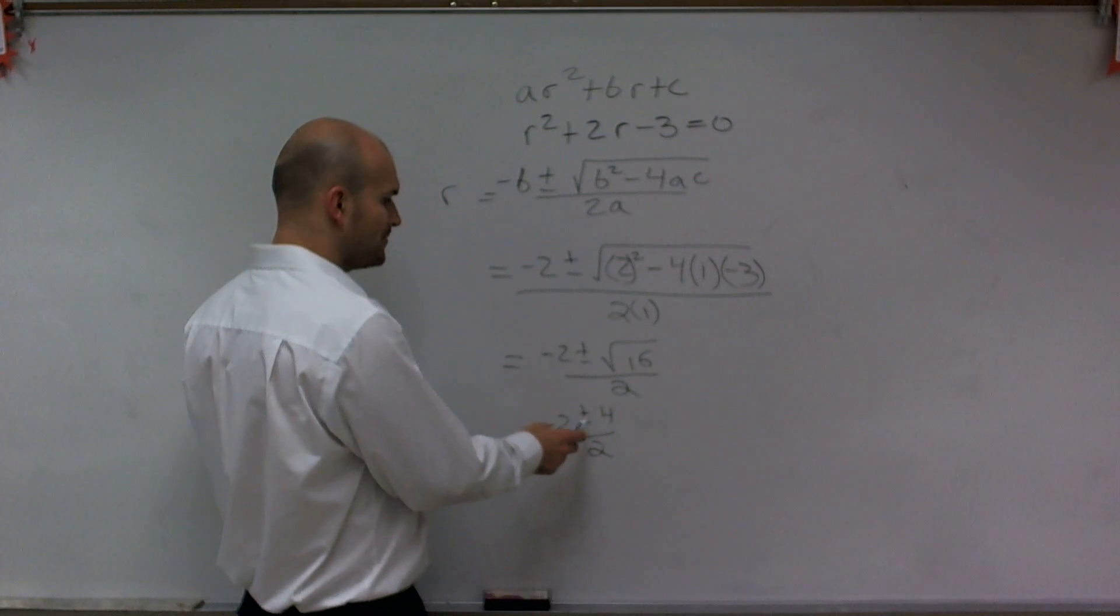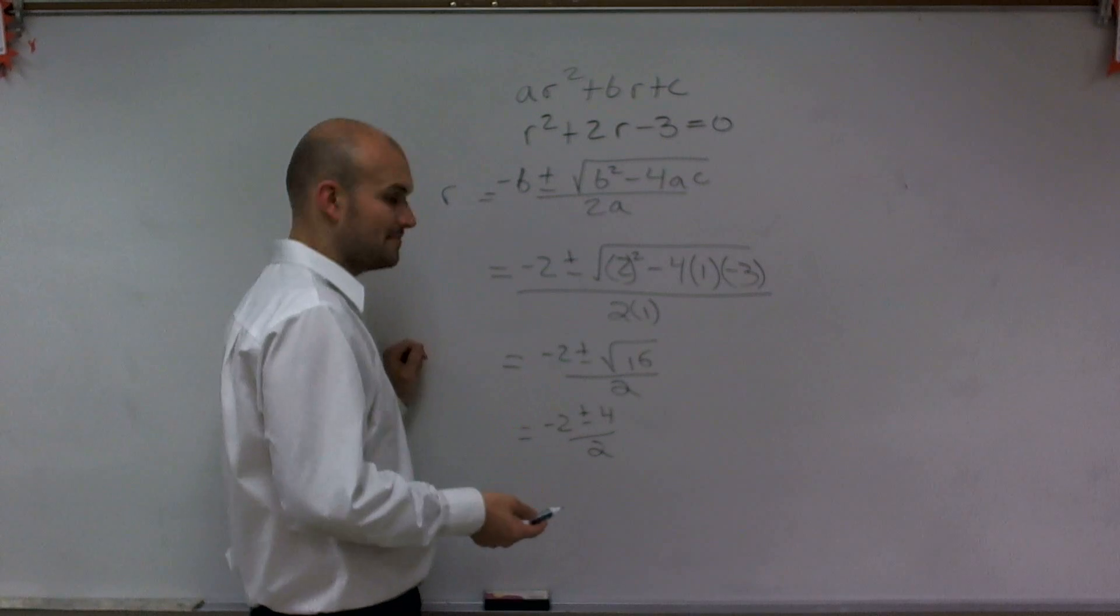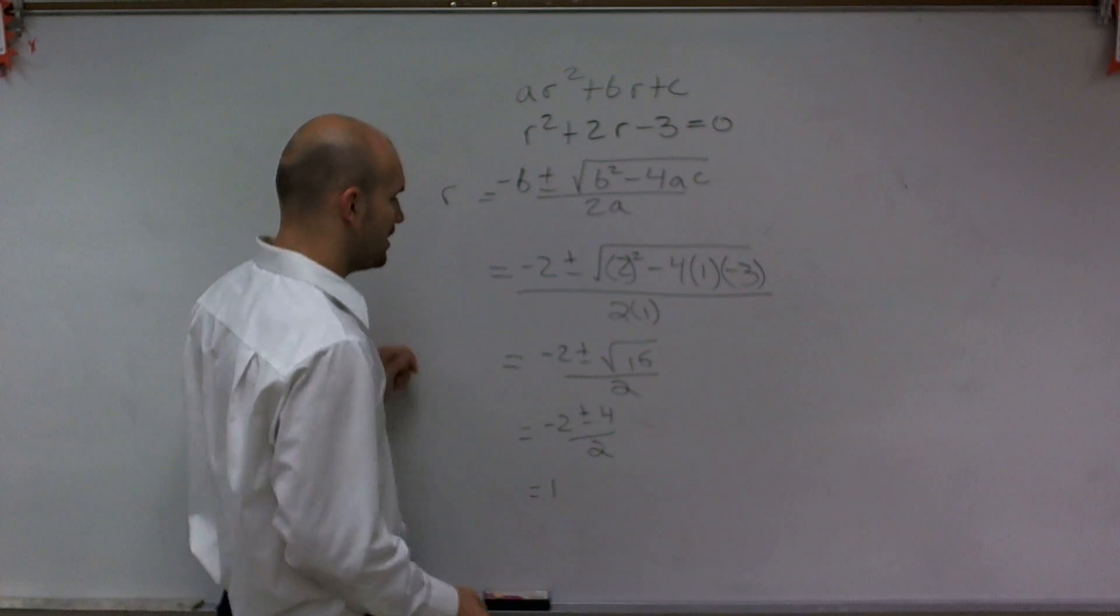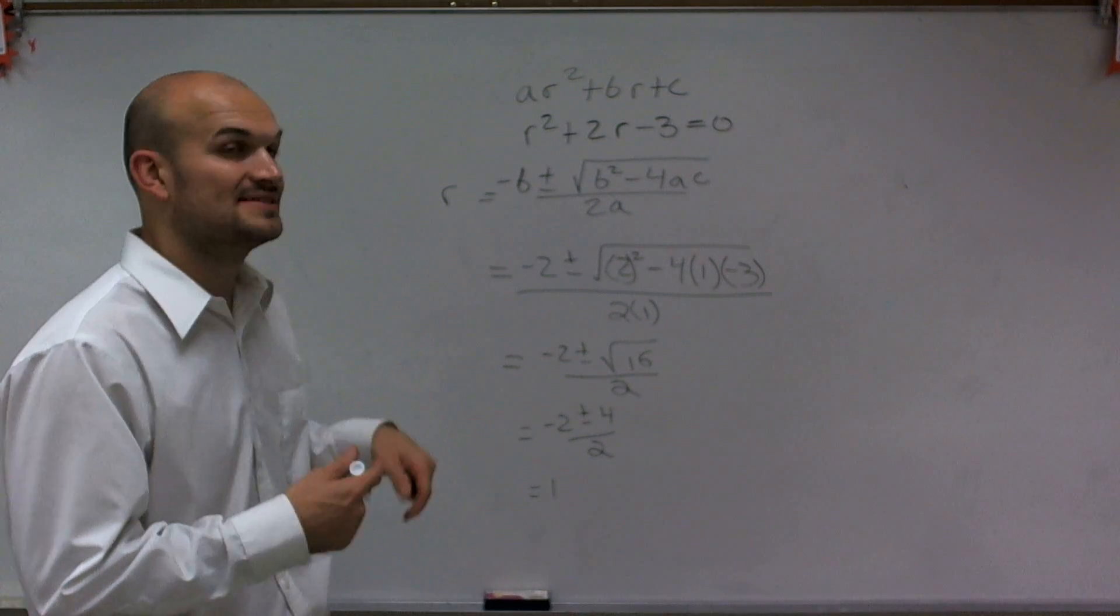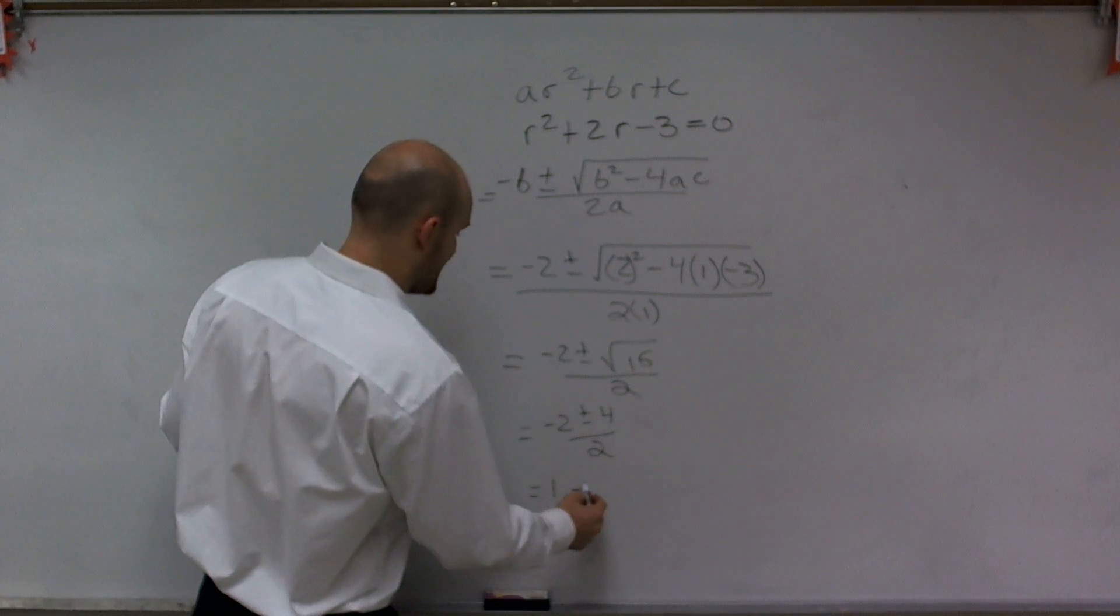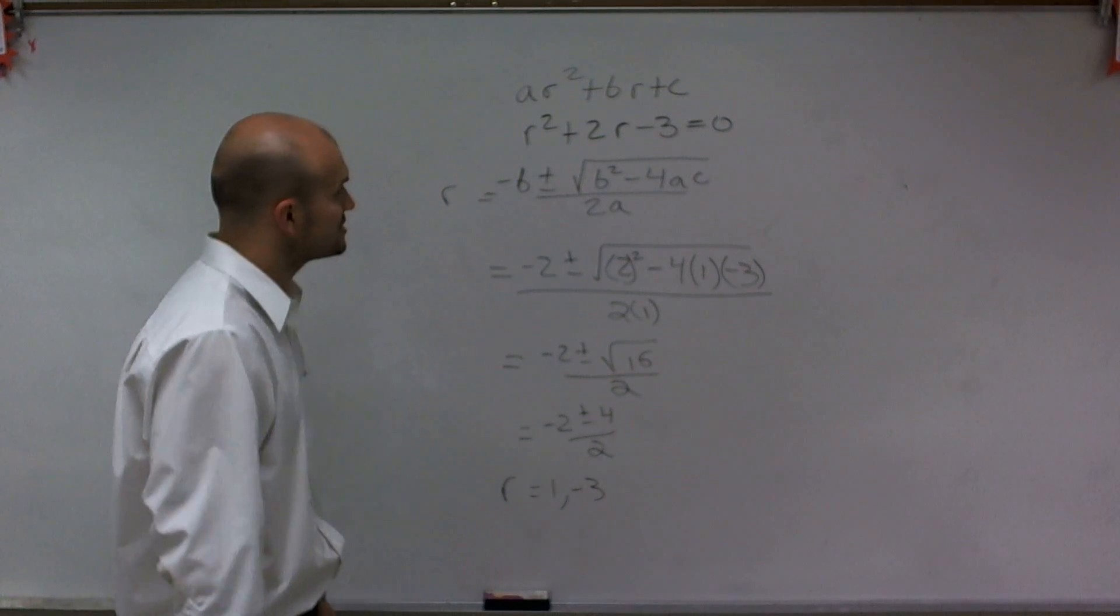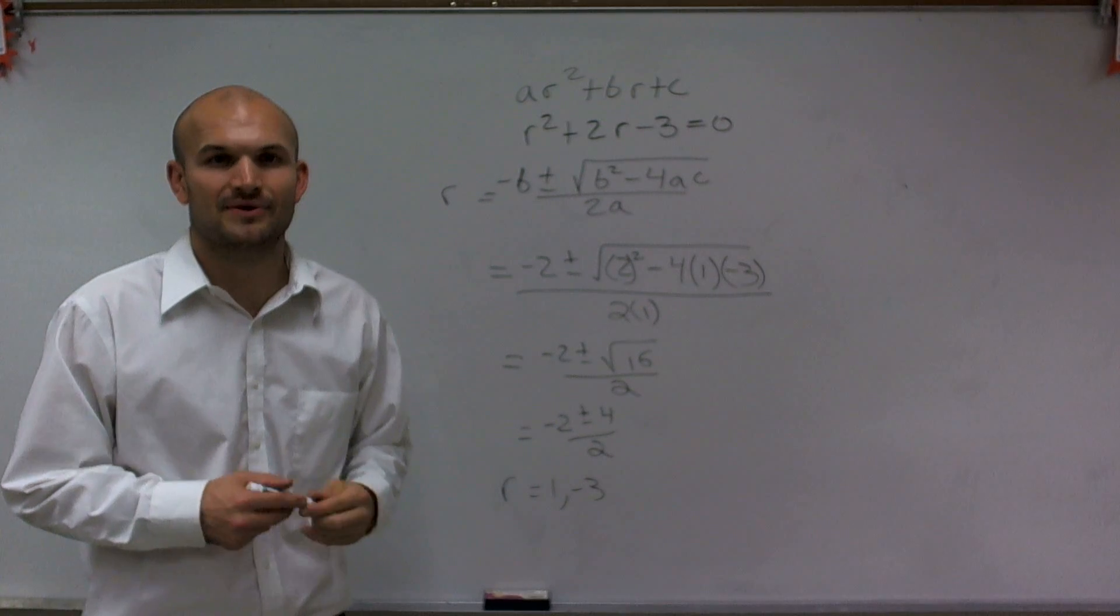So I could have negative 2 plus 4, which would be 2. 2 divided by 2 is going to equal 1. Or I could have negative 2 minus 4 would give me a negative 6. Negative 6 divided by 2 is going to be a negative 3. So therefore, my solutions to this quadratic by using the quadratic formula are going to be 1 and negative 3.